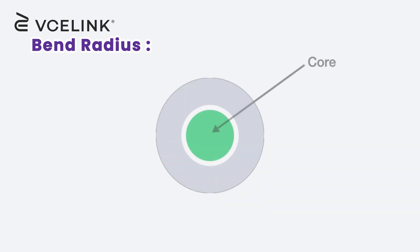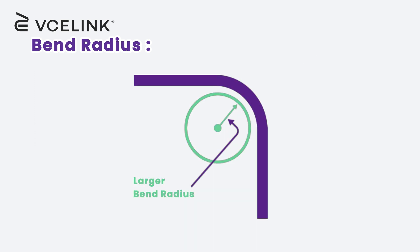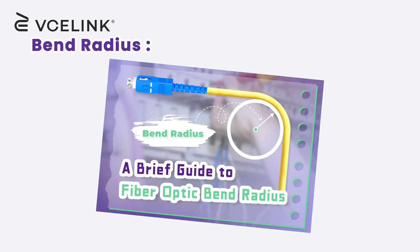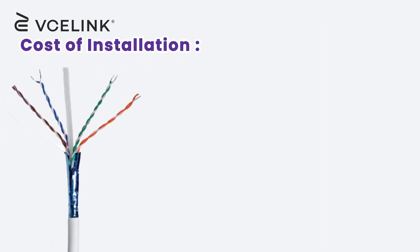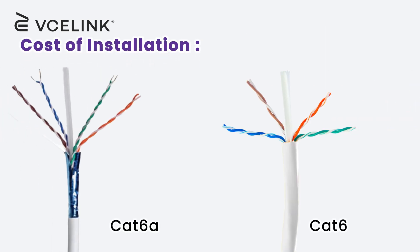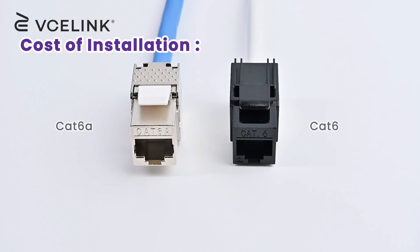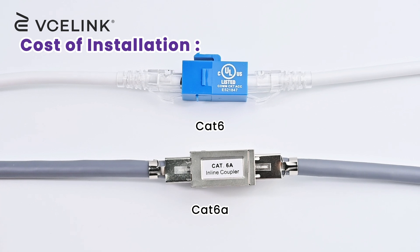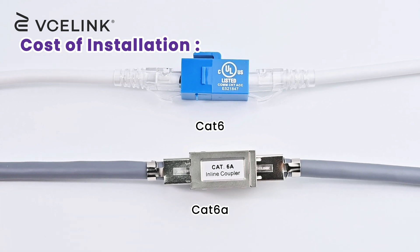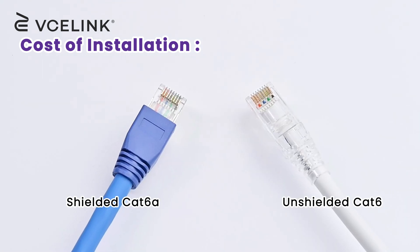Because of the thicker structure, CAT 6A cables have a larger bend radius and occupy more room. You can check more detailed information about bend radius in our blog. CAT 6A cables tend to be more expensive due to their enhanced performance, and they are also compatible with higher performance network equipment, so the cost of CAT 6A installation can be higher than CAT 6 cables.